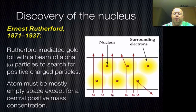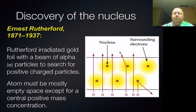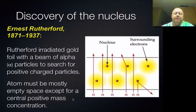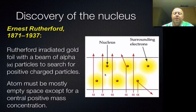Because the alpha particles were positively charged and the nucleus was positively charged, when they got close to each other they would deflect away — like two positive sides of a magnet, or two north poles or two south poles. So this deflection was created by that charge repulsion. The big conclusion was that the atom is mostly empty space, except for a central positive mass — which we now call the nucleus.